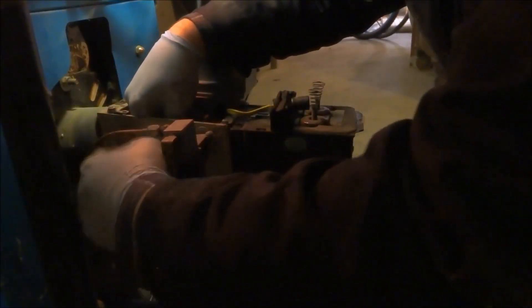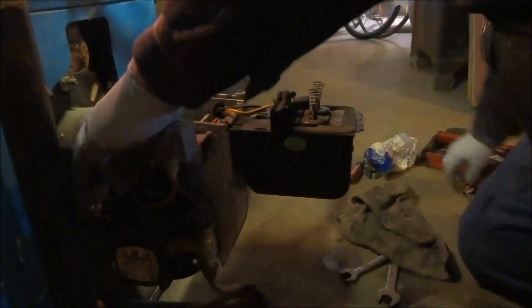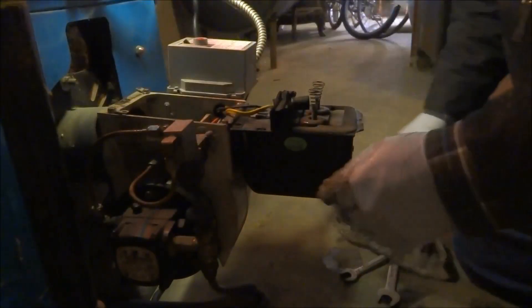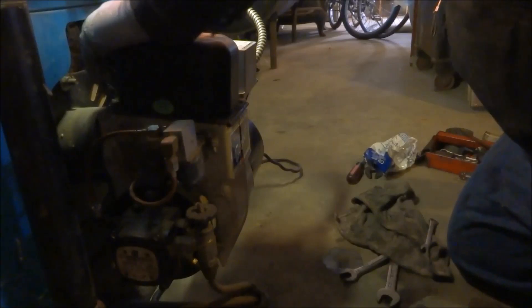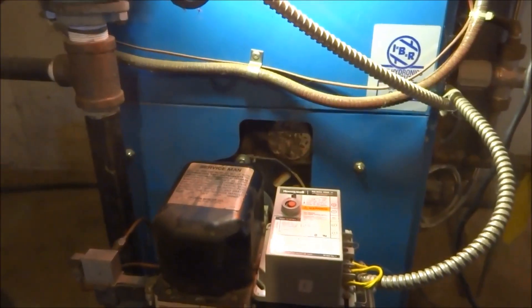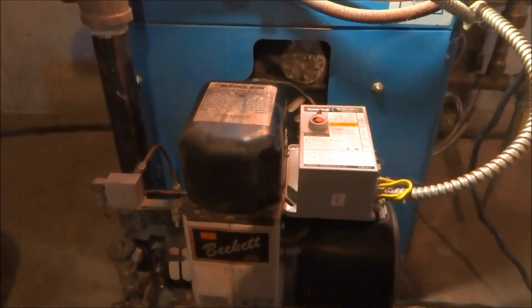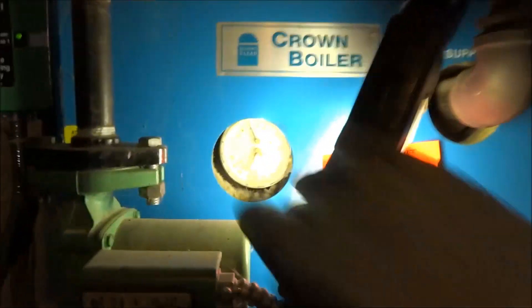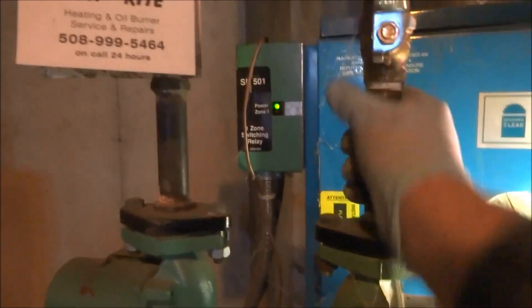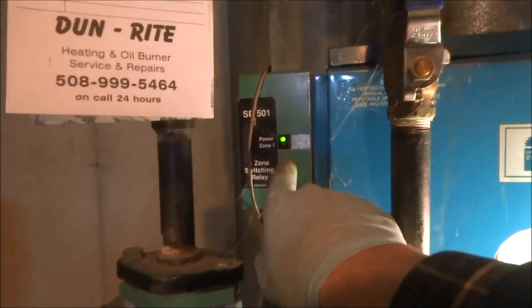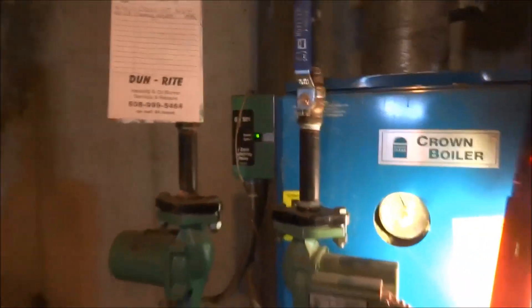This guy's done without heat all night, so I'm going to get it back up and running for him. Hopefully these zones aren't frozen upstairs, we'll find out. There we go. It's going to get up to the low limit, which is 160 for the circulators kick in. He's got one zones not calling here, plus he's got them off. Like I said, he's got a pellet stove.